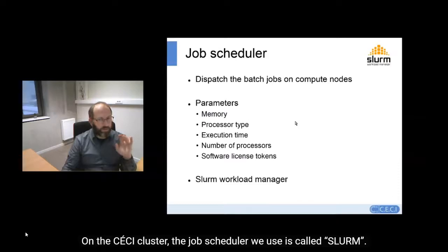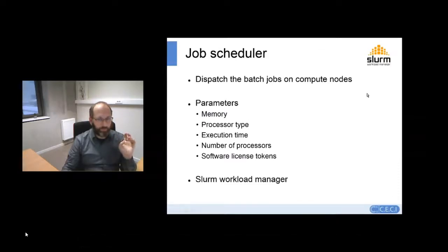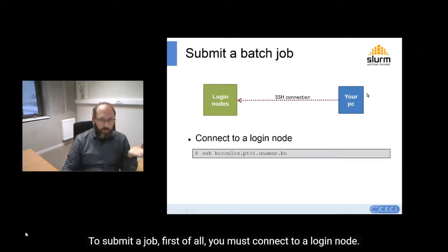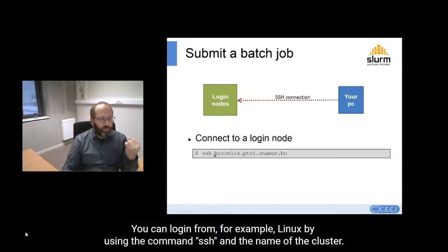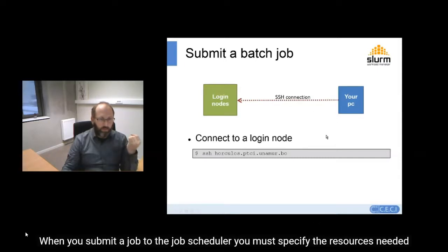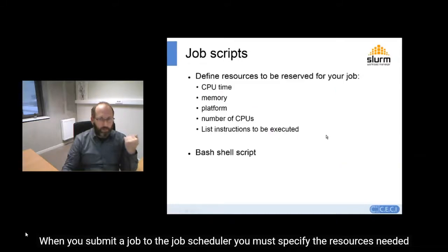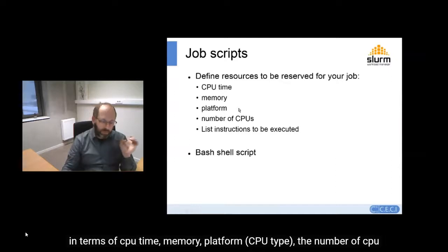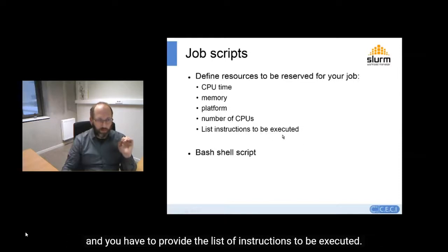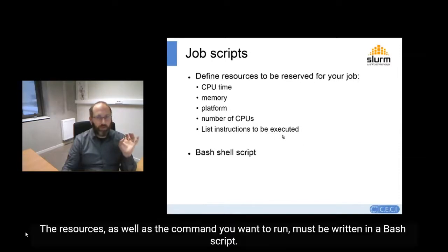On CECI clusters, the job scheduler we use is called SLURM. To submit a job, you must first connect to a login node — for example, from Linux using the SSH command and the name of the cluster. When you submit a job to the job scheduler, you must specify the resources needed in terms of CPU time, memory, platform, CPU type, and number of CPUs. You must also provide the list of instructions to be executed. The resources as well as the commands you want to run must be written in a Bash script.